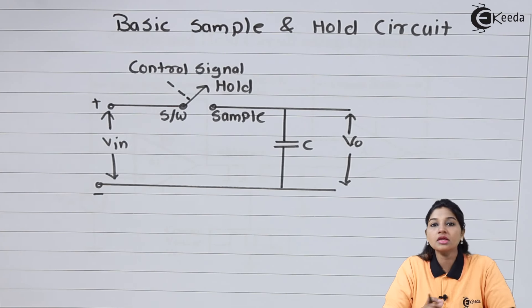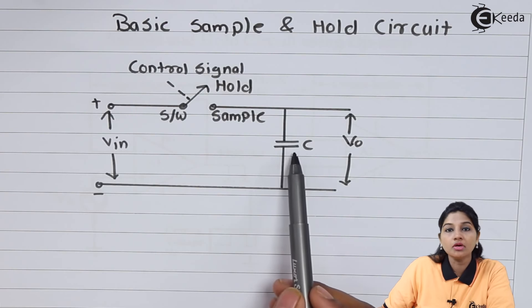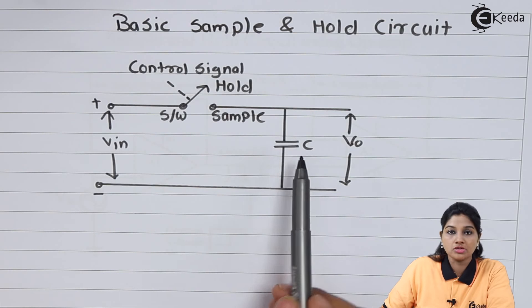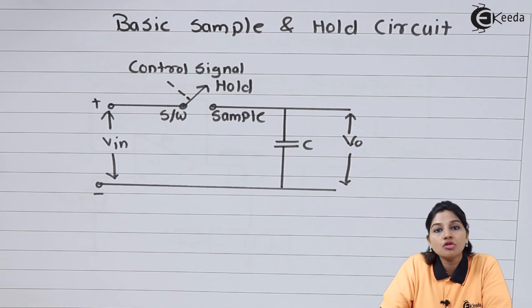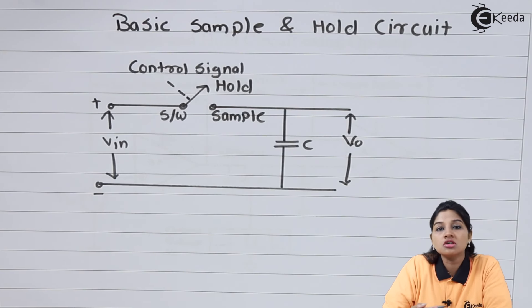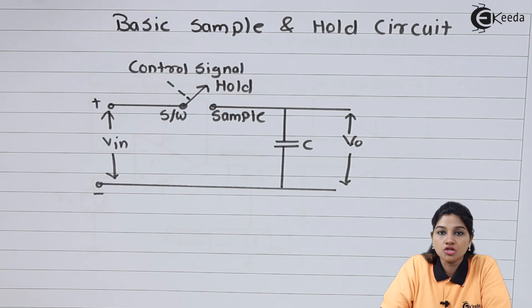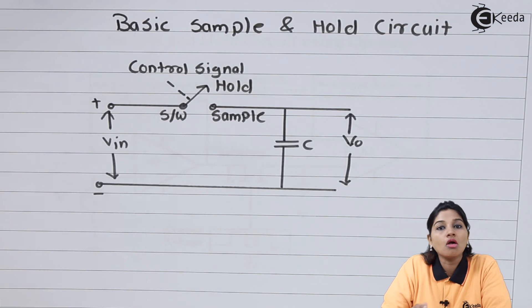In the case of sampling mode, the switch is in the closed position. Therefore, the input voltage will appear across the capacitor, and the capacitor will charge to the instantaneous value of input voltage VIN. This process is called the sampling process.